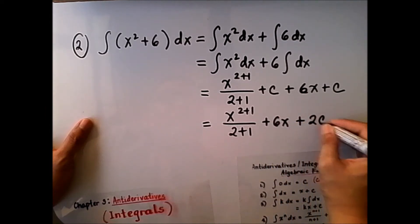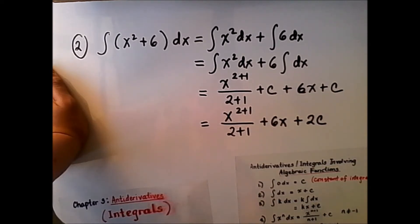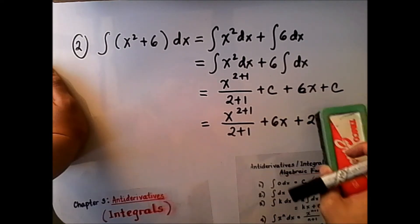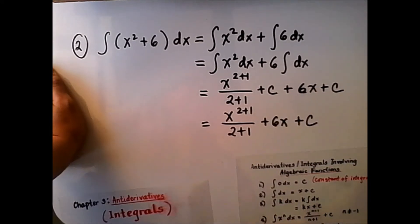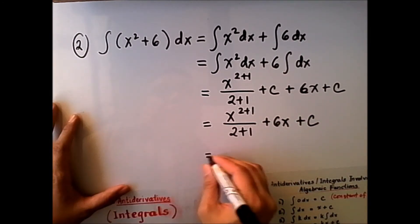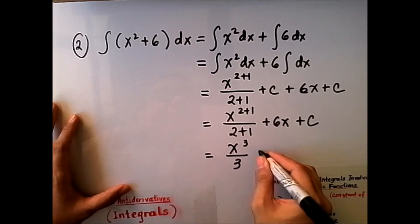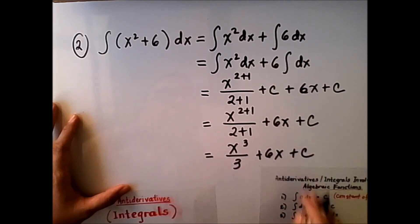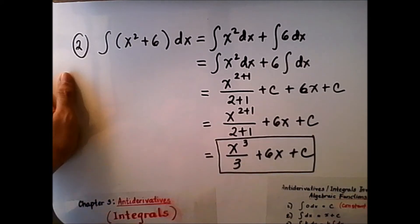When we simplify, this becomes x to the power of 2 plus 1 over 2 plus 1, plus 6x, then plus 2c. Note that a constant times 2 is still a constant, so it is preferable to just write c instead of 2c. Constant plus constant is a constant. Therefore, simplified, this becomes x cubed over 3 plus 6x plus c — that is the integral of x squared plus 6 dx.